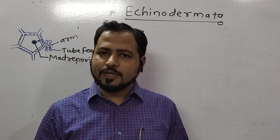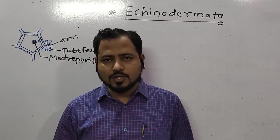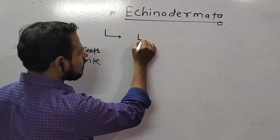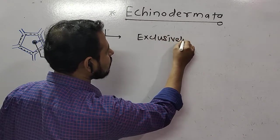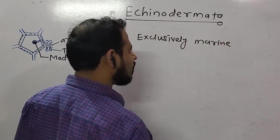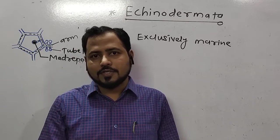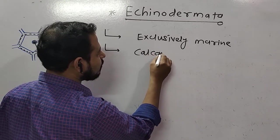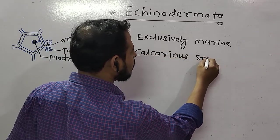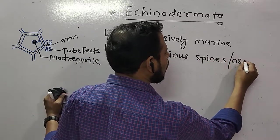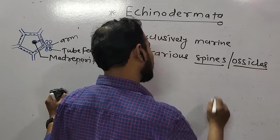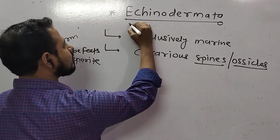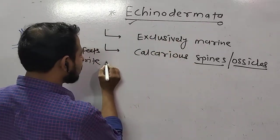Welcome to this lecture on Phylum Echinodermata. In the last lecture we discussed Phylum Mollusca. These animals are exclusively marine animals, found only in marine water and never in freshwater bodies. They are characterized by the presence of calcareous spiny skin — spines or ossicles made generally of calcium carbonate. 'Echino' means spines and 'derma' means skin.